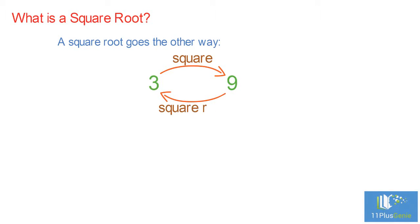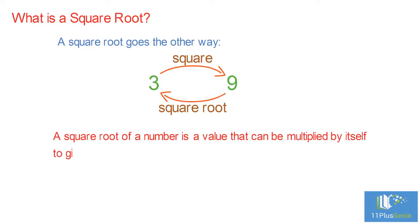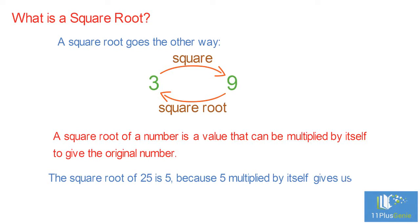What is a square root? A square root goes the other way. 3 squared is 9, and the square root of 9 is 3. A square root of a number is a value that can be multiplied by itself to give the original number. A square root of 25 is 5, because when 5 is multiplied by itself we get 25.